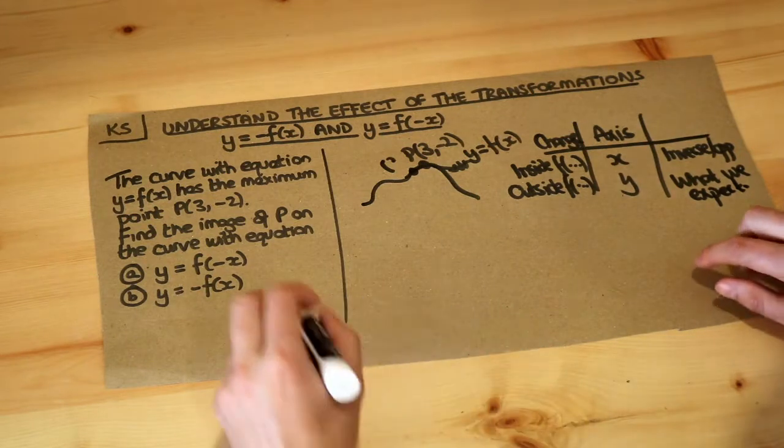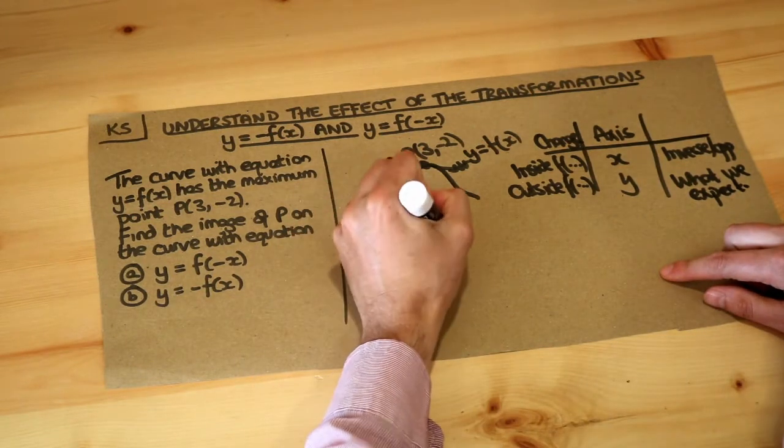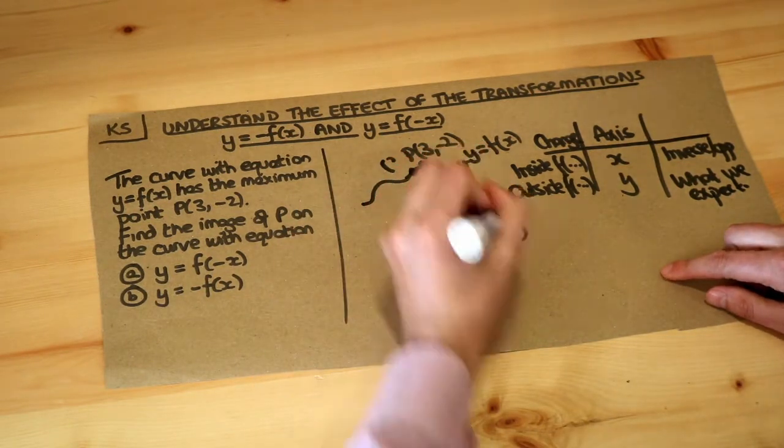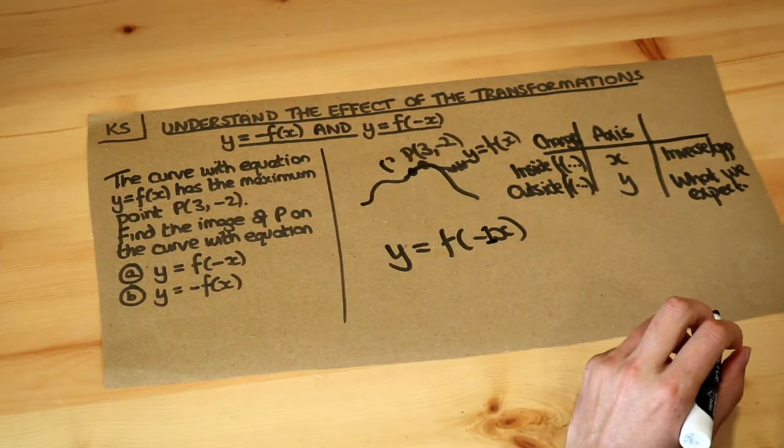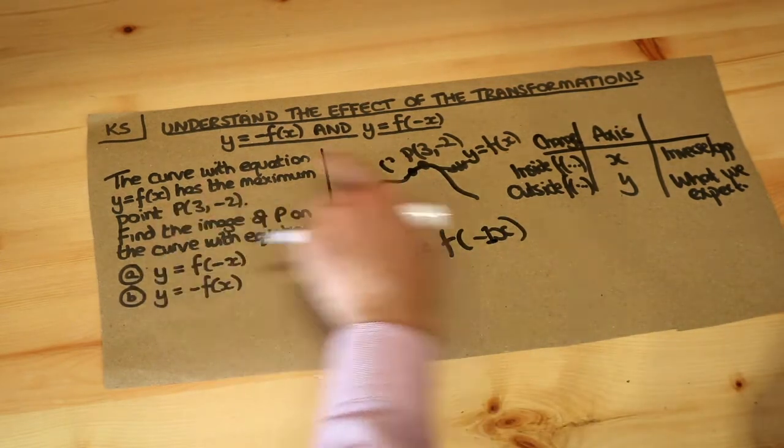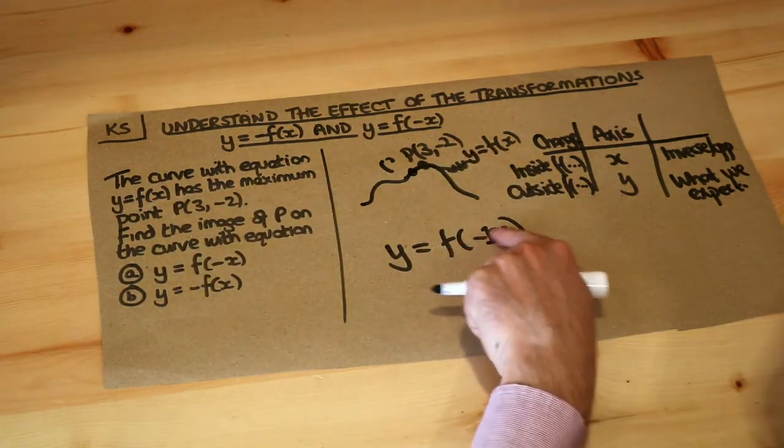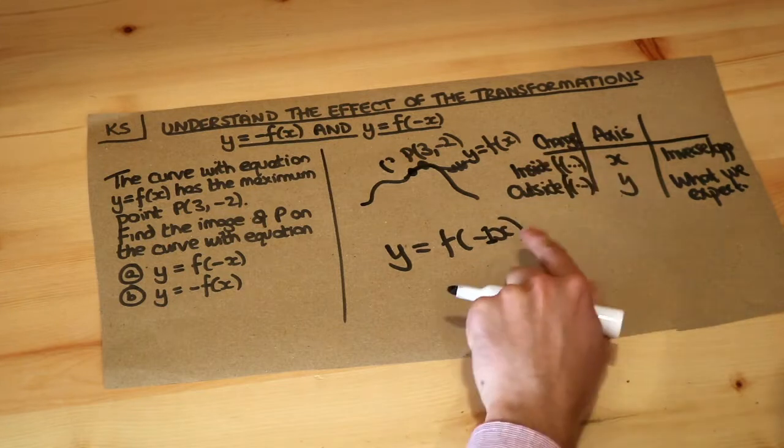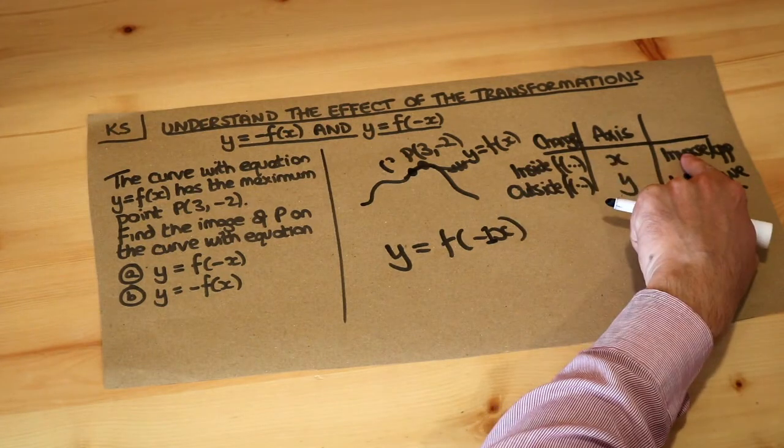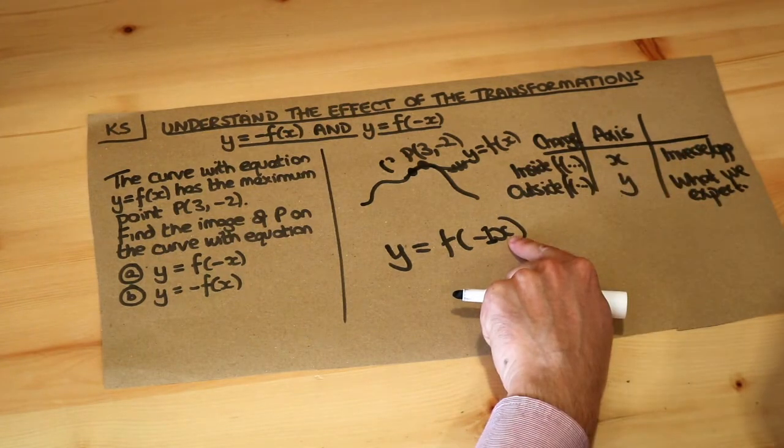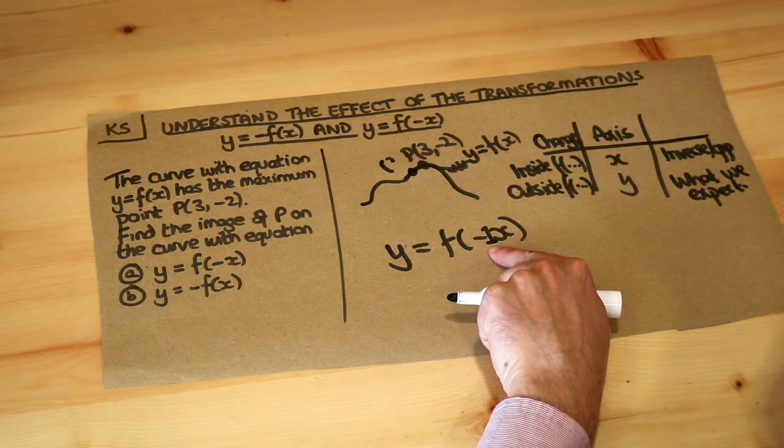So for example if we look at y equals f of minus x, let's say I put a minus 1 in there. What's happening here? Well compared to the original equation of y equals f of x we've changed something inside the function, so it's going to be this row here, so it's going to affect the x axis and do the opposite. Now what's happening to x? We're multiplying it by minus 1.